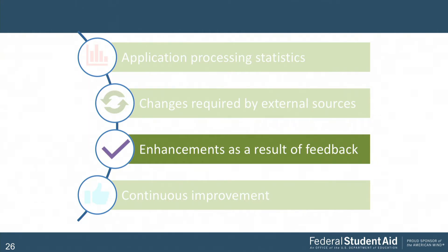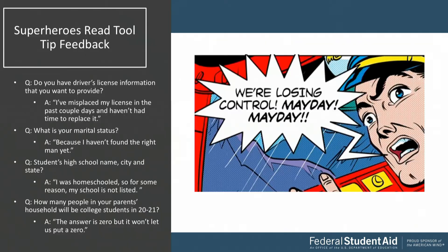Transitioning to enhancements from feedback, here are some actual not-helpful responses received from students on our tool tips. For the driver's license help topic: 'I've misplaced my license in the past couple of days and haven't had time to replace it.' For marital status: 'Because I haven't found the right man yet.' For the student's high school name: 'I was homeschooled, so for some reason my school is not listed.' And for how many people in your parents' household will be college students in 2021: 'The answer is zero, but it won't let us put zero.'